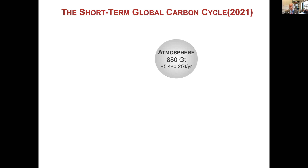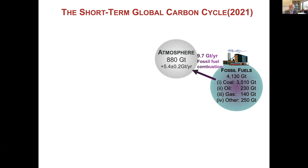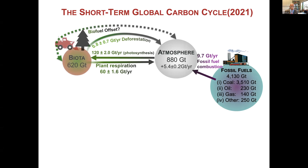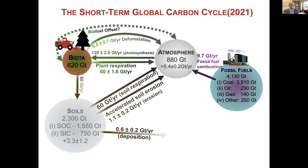Looking at the global carbon cycle on a short-term basis: the atmosphere currently contains approximately 880 gigatons, and last year increased by 5.4, primarily because of fossil fuel combustion of about 10 gigatons of carbon. In addition, about 0.8 to 1 gigaton of carbon comes from deforestation and land use conversion. But at the same time, we have about 120–123 gigatons of photosynthesis, and half of it — about 60 gigatons — is respired back to the atmosphere immediately. The remaining goes to soil, and the soil also respires much of it back. Only a small amount, maybe 1 to 3 gigatons, remains in the terrestrial biosphere.